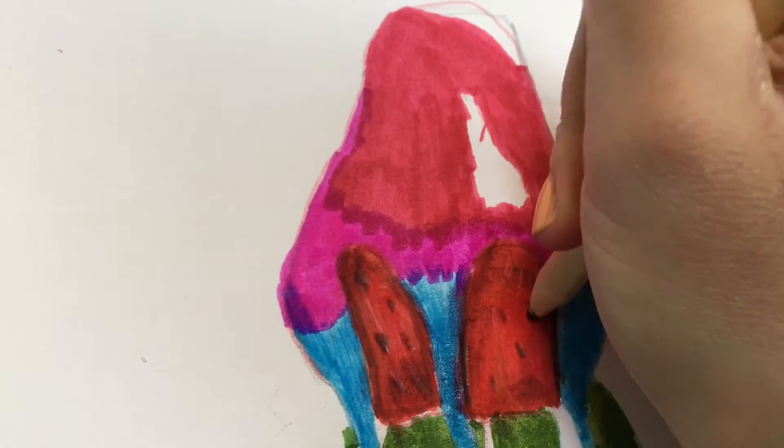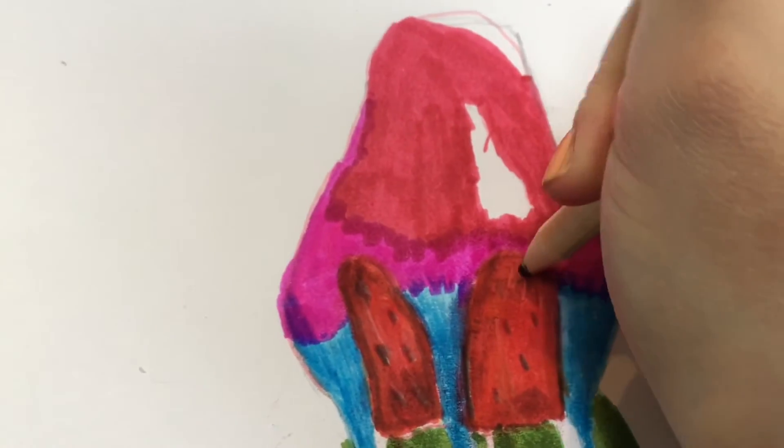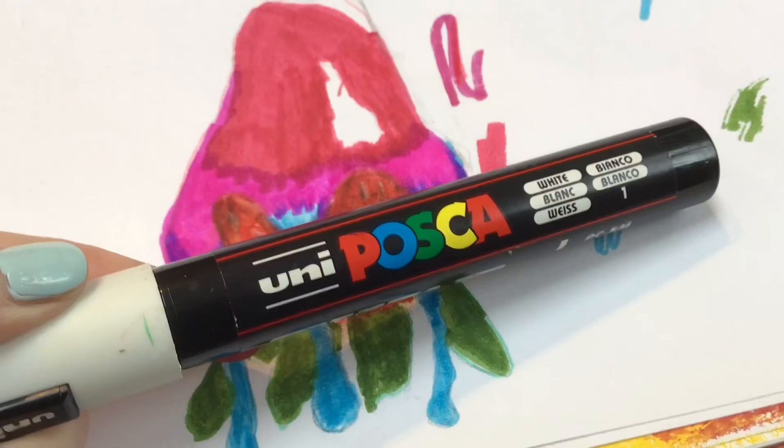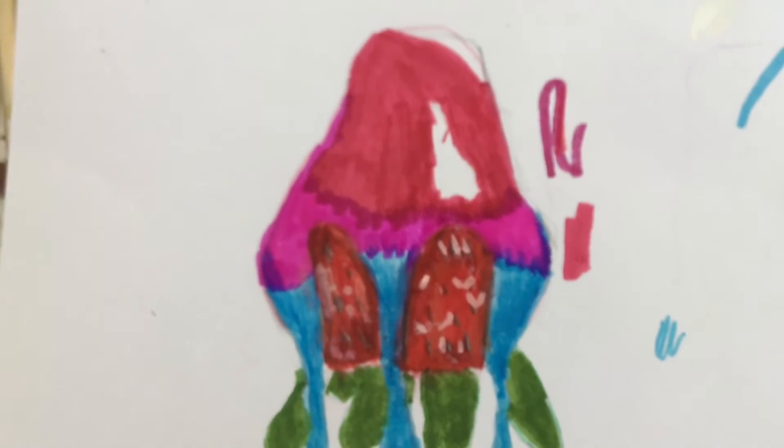Then I did black little seeds. Then I'm taking my Posca paint pen and I'm adding highlights.